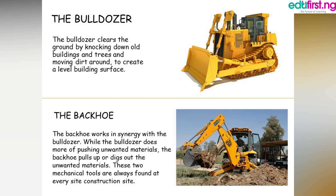The backhoe: the backhoe works in synergy with the bulldozer. While the bulldozer does more of pushing unwanted materials, the backhoe pulls up or digs out the unwanted materials. These two mechanical tools are always found at every construction site.